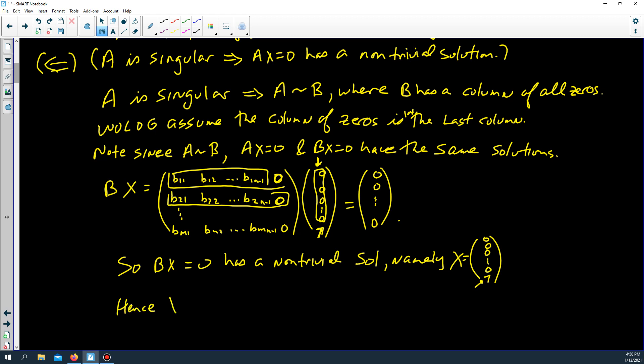Hence, x equal to 0, 0, lot of zeros, 0, 7, is a non-trivial solution to Ax equals 0 as well.